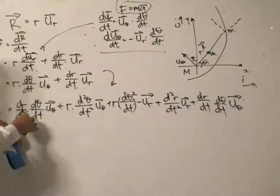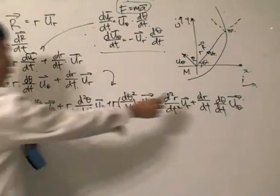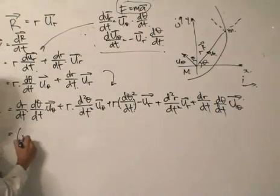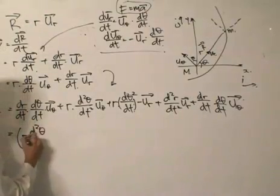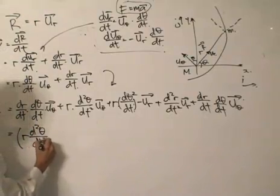Now, dR/dt dθ/dt and I got another one there, so there will be two. So I'll write this one first which is R d²θ/dt².